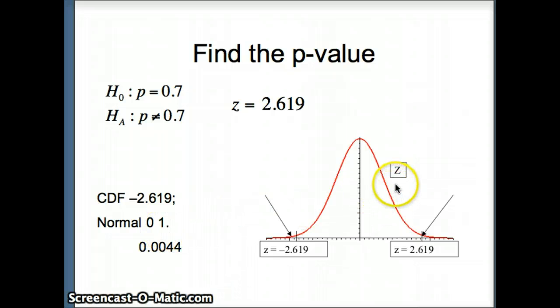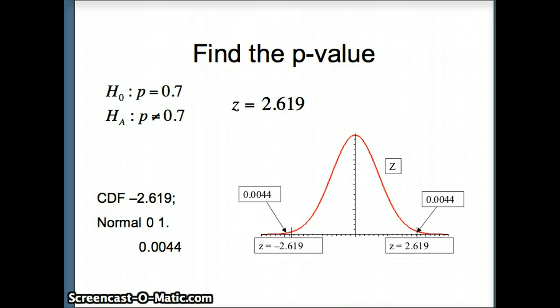With a normal 0, 1. Because this is a z-distribution. A z-distribution is normal. It has a mean of 0 and a standard deviation of 1. So this little probability that comes back is 0.0044. So there is 0.0044 in the left tail and 0.0044 in the right tail. So we can see those two tails, those two probabilities. And the p-value is the sum of those two tails since it is a two tail test. So our p-value is twice 0.0044 or 0.0088.